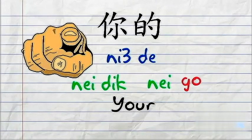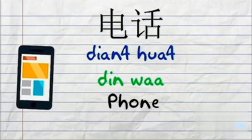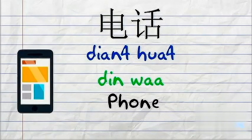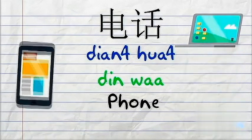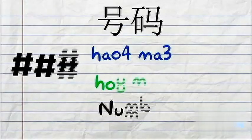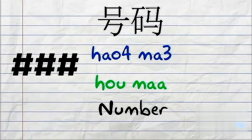你的 means 'your'. 电话 means 'phone'. 电 also means 'electric', so 电脑 is 'computer', 电线 is 'electric wire'. 好吗 is 'number'. So 我没有你的电话号码 — it means 'I don't have your phone number'.